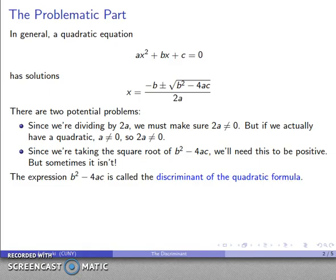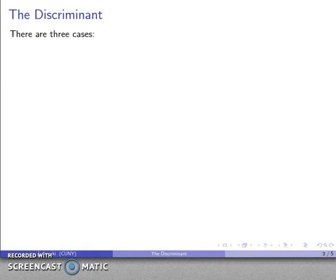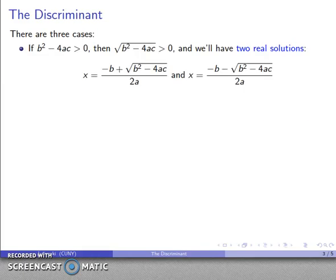And whether this is positive or negative or zero is going to tell us something about the solutions to our quadratic equation. So there's three important cases. If b squared minus 4ac is positive, then this is a real number and we actually get two real solutions.